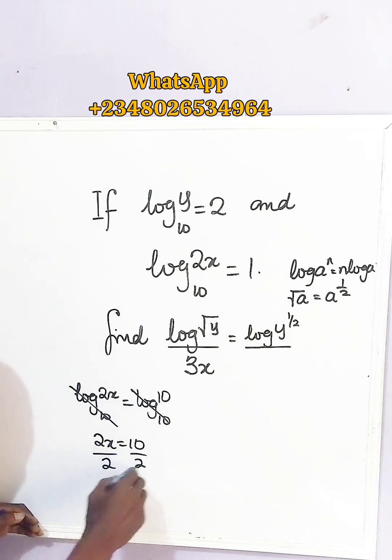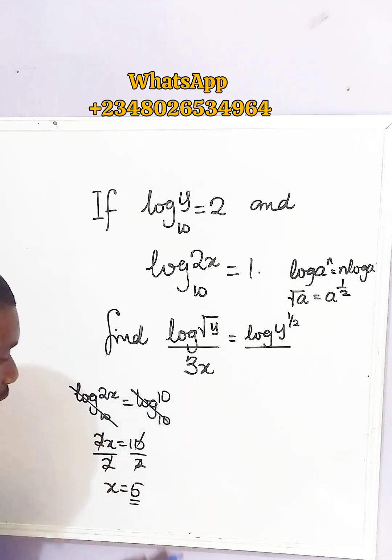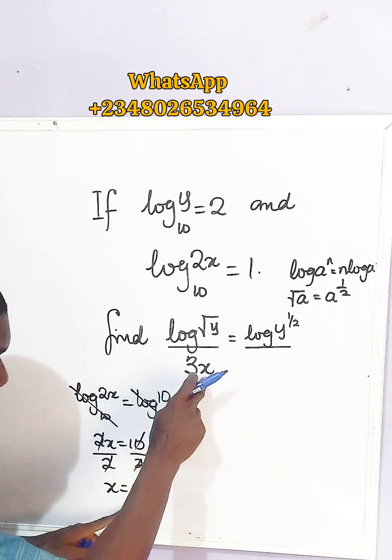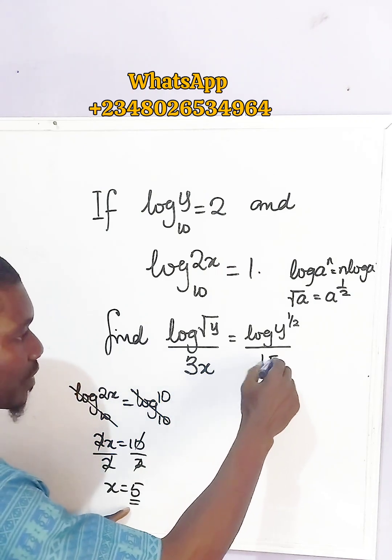Dividing both sides by 2, then x equals 5. So at this point, 3 times x gives us 15.